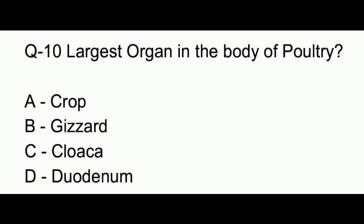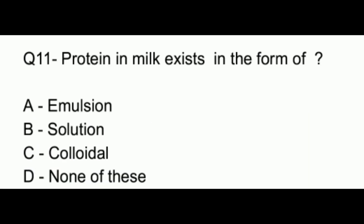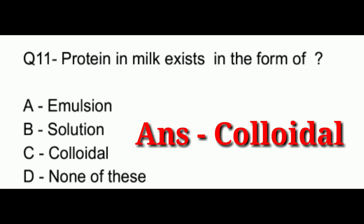Question number 11. Protein in milk exists in the form of: option A, emulsion; option B, solution; option C, colloidal; option D, none of these. The answer to this question is option C, which is colloidal.